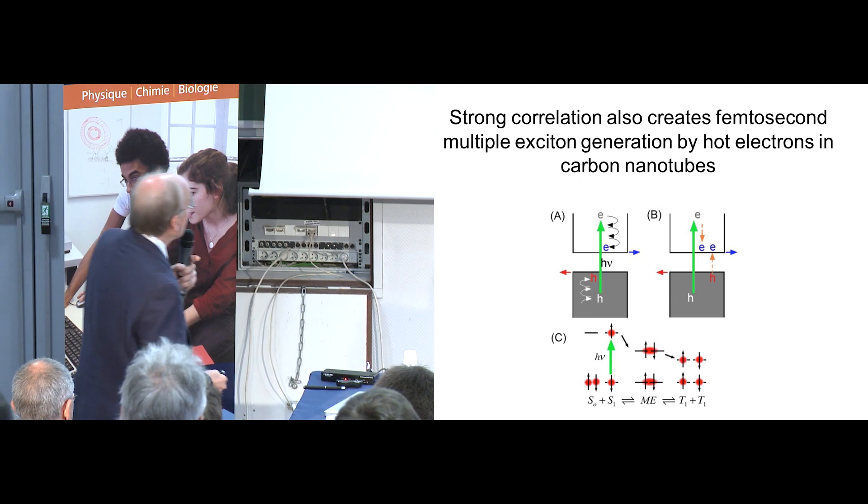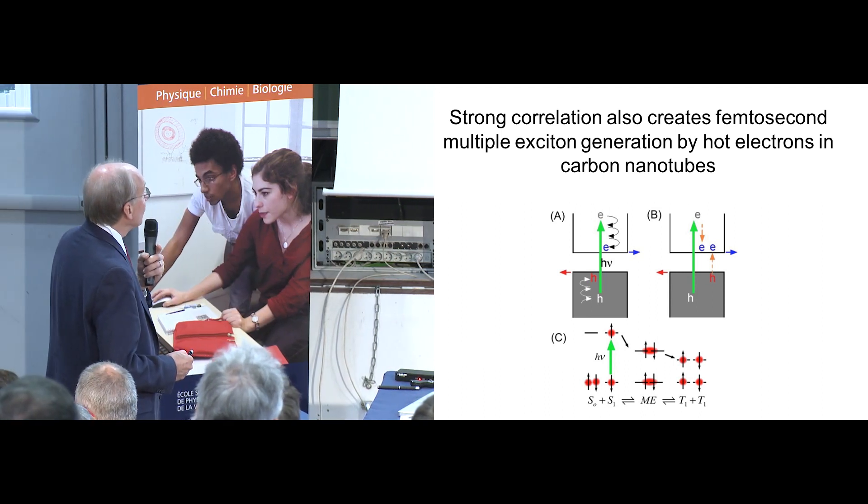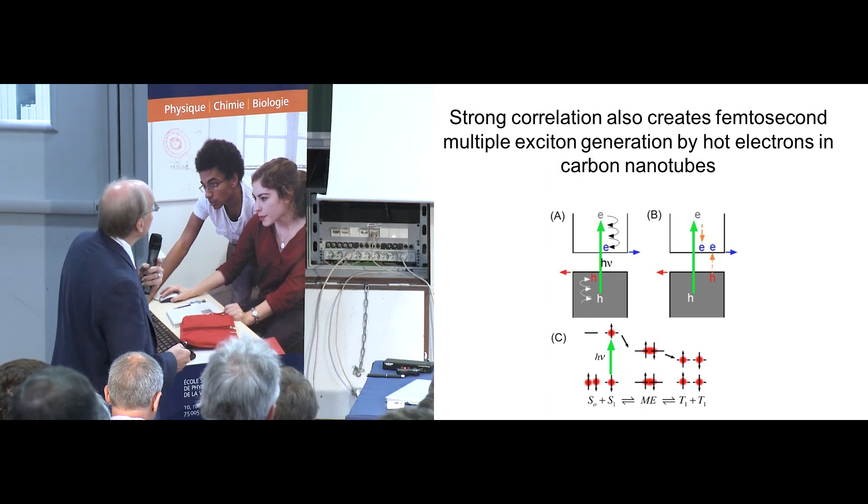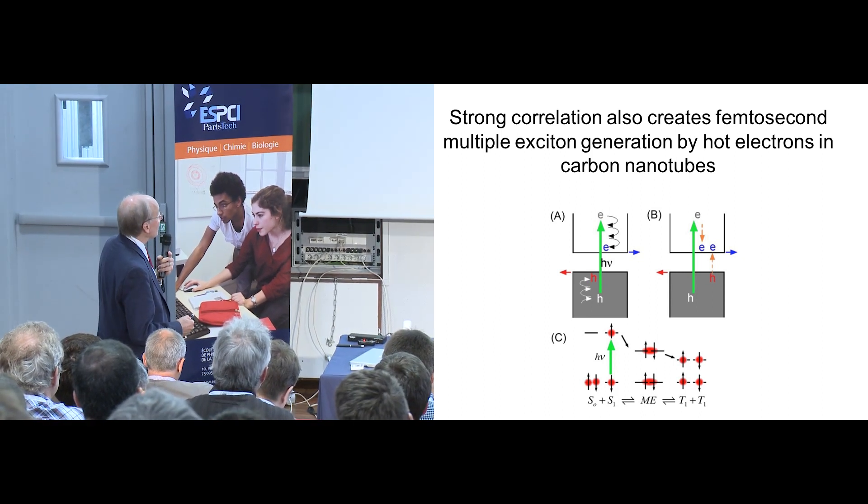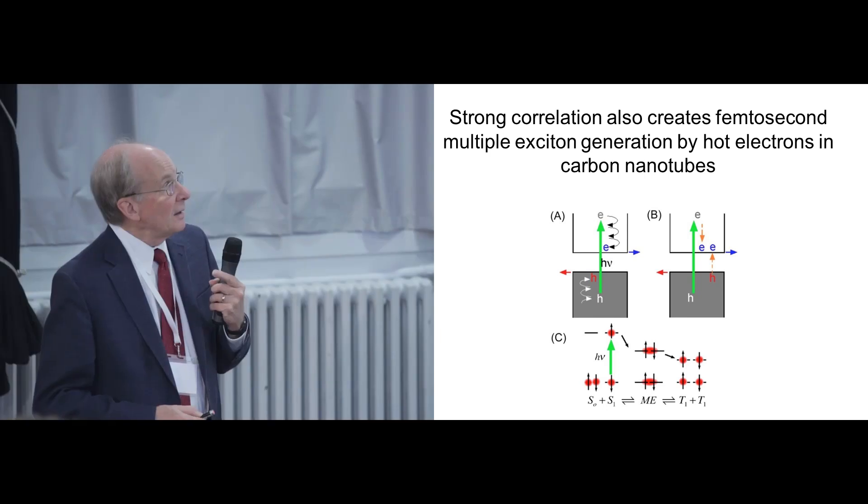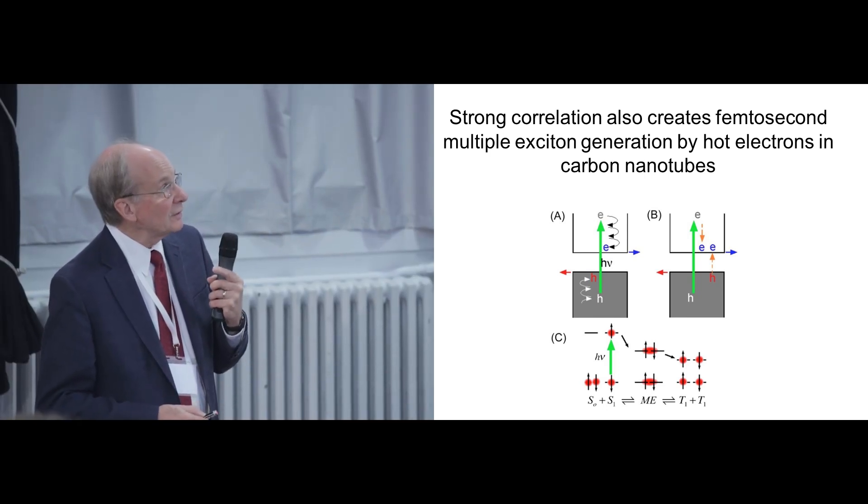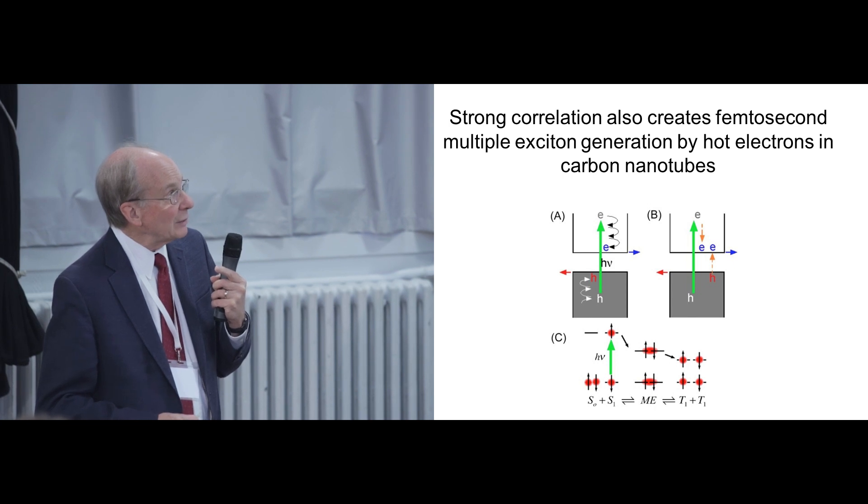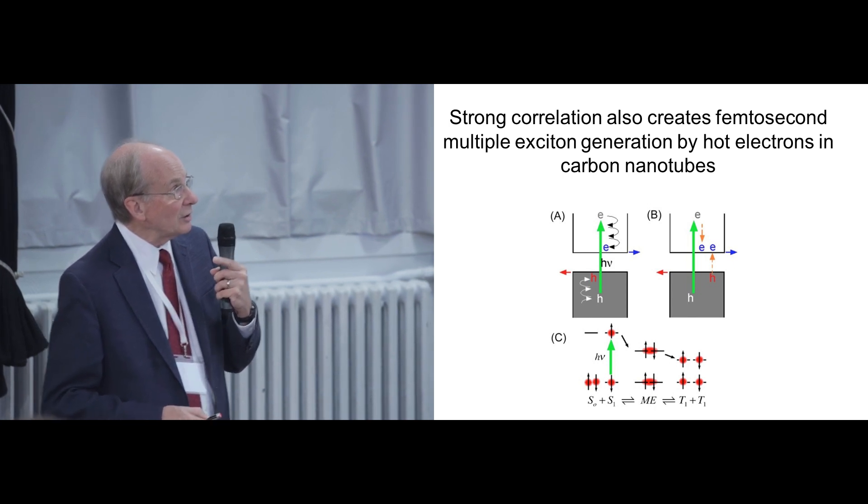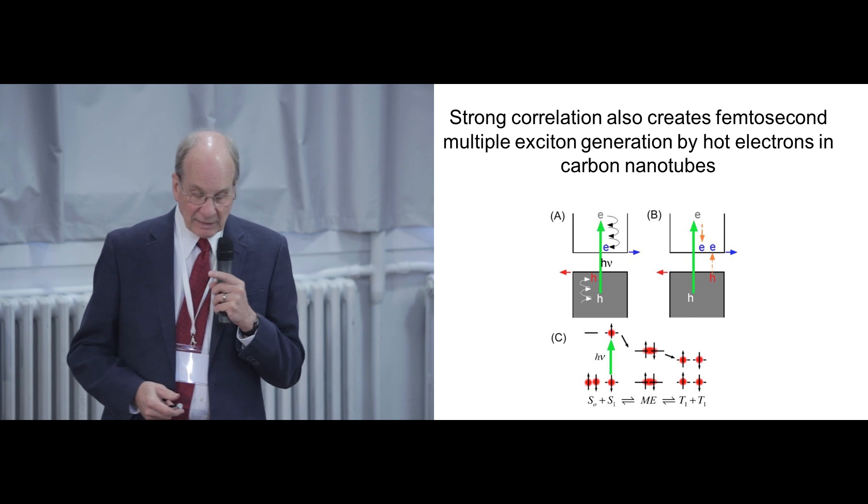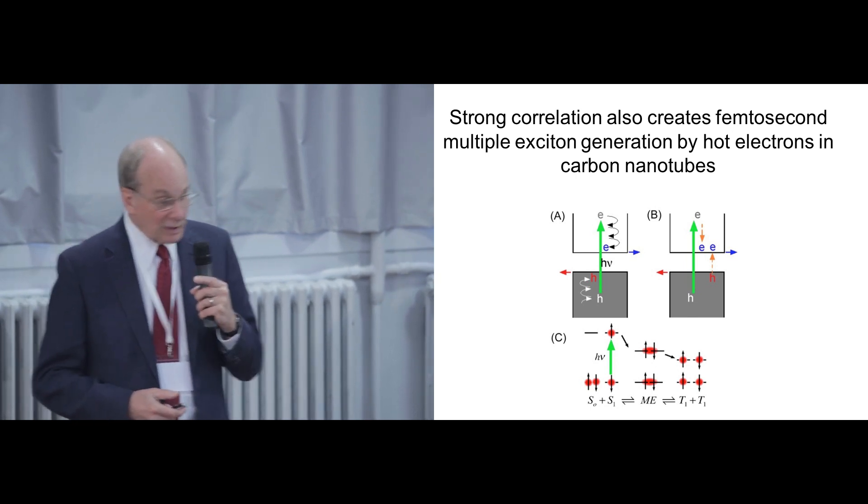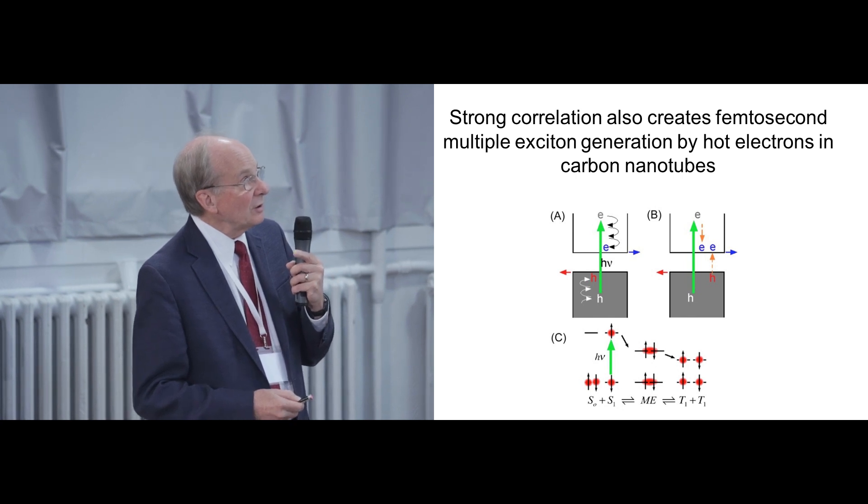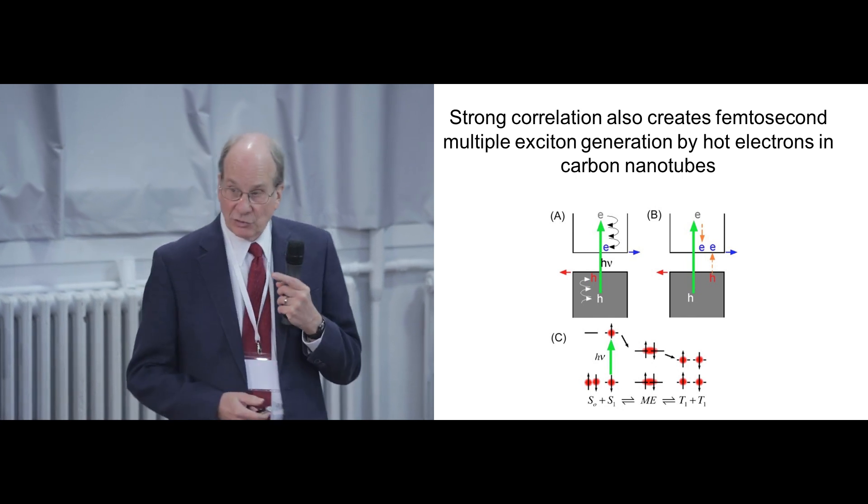The other thing which this strong correlation comes, strong Coulomb interaction, is this multiple exciton generation, which we'll hear a lot about at this meeting. Most physical systems, if you have a very high energy electron in a very high energy hole, they will relax to the band gap by production of heat, vibrational relaxation. This gives the Shockley-Queisser limit. This is in competition with relaxation to the band edge by exciton creation.